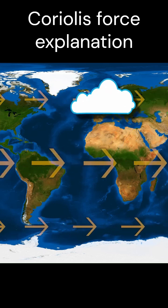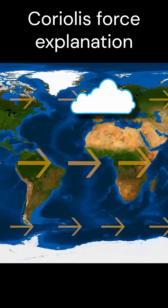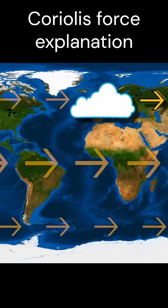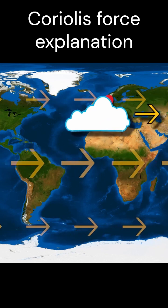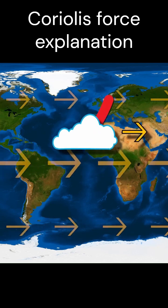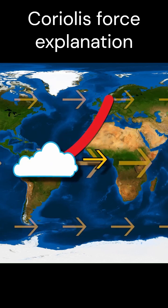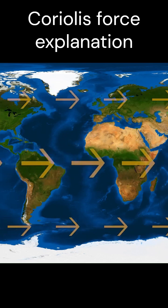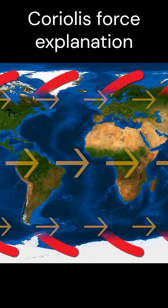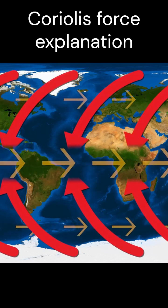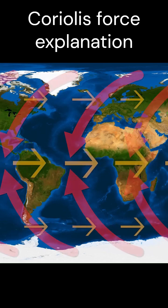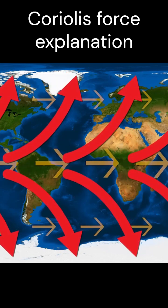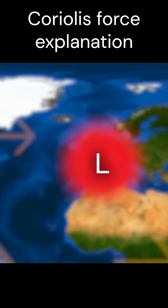When you go from the equator to the pole, winds are deflected to the right side. When you go from the pole to the equator, they are deflected towards the left side because of the pressure difference. This is the overall gross movement towards the surface, from the equator to the poles.